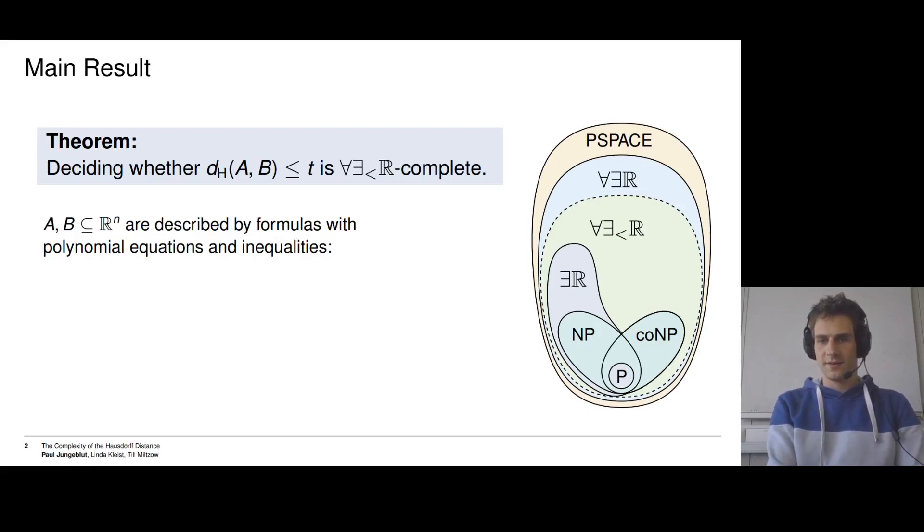But first, a little disclaimer. Of course, the complexity of this question heavily depends on how complex the given sets are, in this case A and B. And in our case the sets are fairly complicated. So A and B are described via formulas consisting of polynomial equations and inequalities.